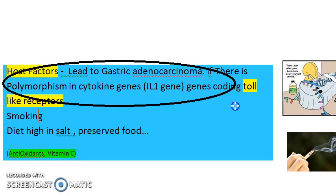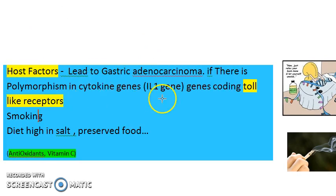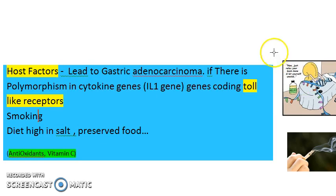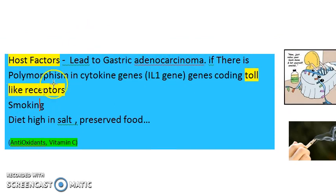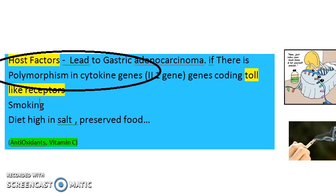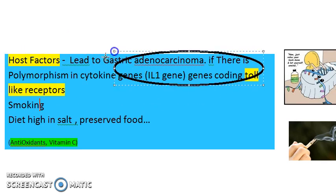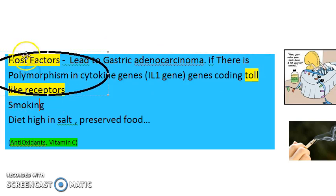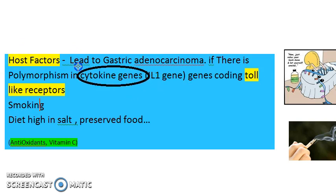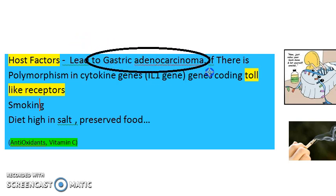The fifth and last point is host factors. Some people may have polymorphisms in cytokine genes — such as the IL-1 gene — or in genes coding for toll-like receptors. This host factor, the altered or polymorphic genes, means H. pylori can take advantage and lead to gastric adenocarcinoma in those individuals.